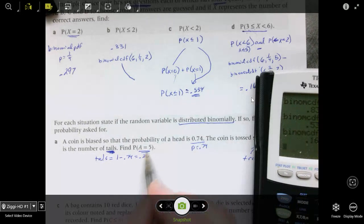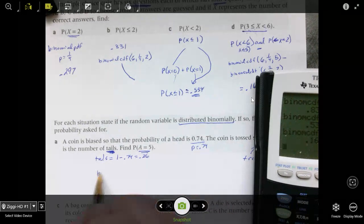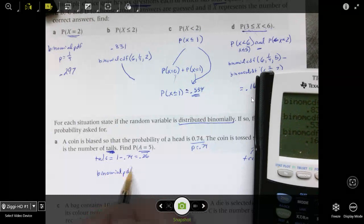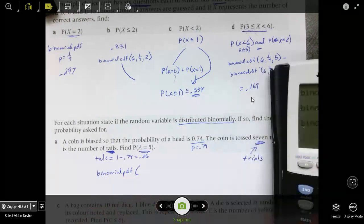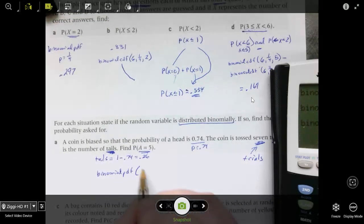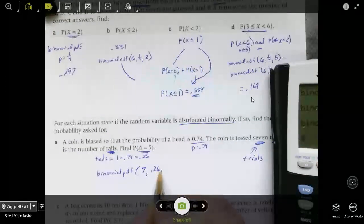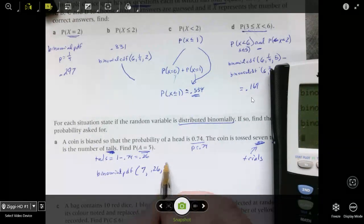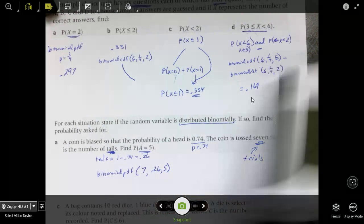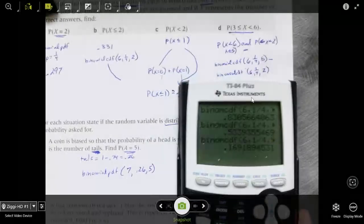I know I'm using a good old-fashioned calculator, so you can see me enter it. So I want PDF because I'm doing a specific value. Seven trials. The probability is 0.26. And the X value is 5. So that's 0.01366. So 0.0137.